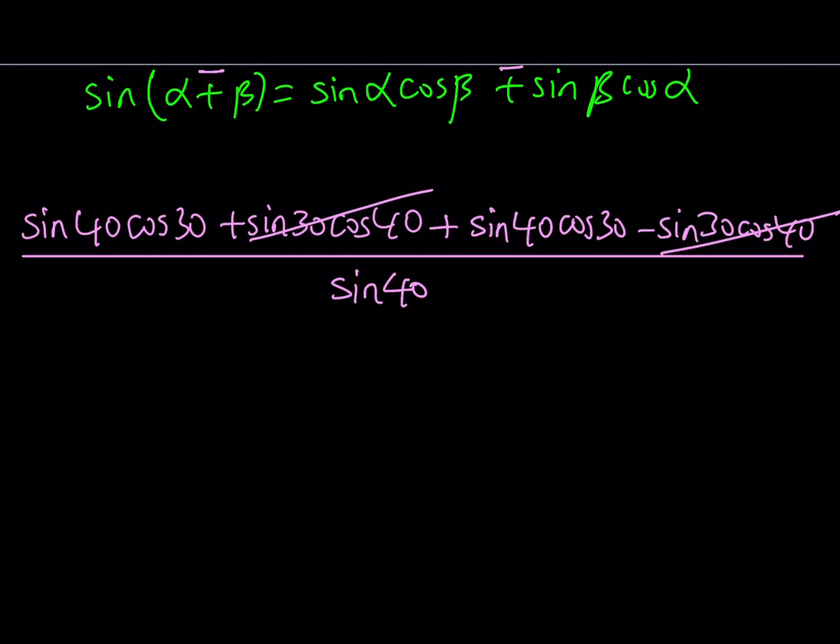And then on top, we have the sine 40 cosine 30 twice. So we can write it as 2 sine 40 cosine 30. And at the bottom, we're going to get sine 40.